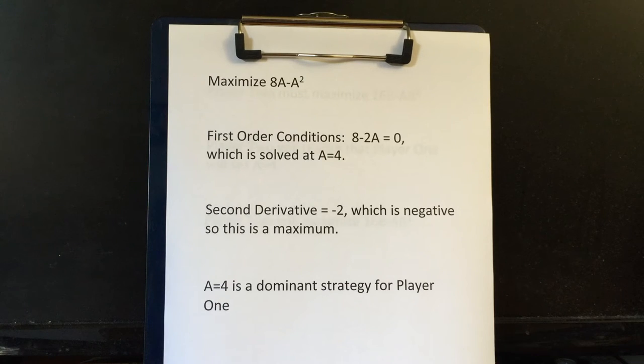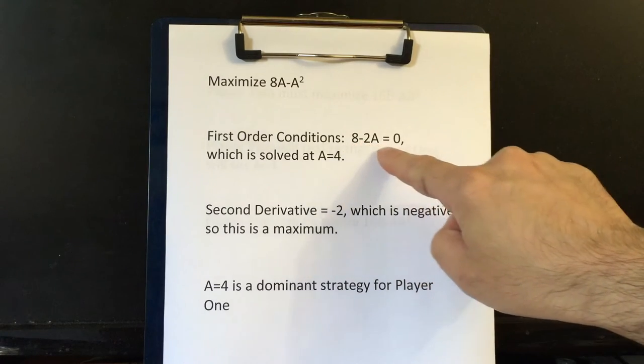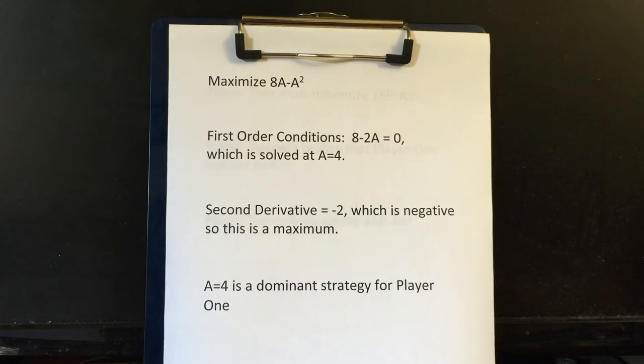Then to make sure we found a maximum and not a minimum, we have to take the second derivative. We take the derivative of this again and we get negative two. And it turns out by the rules of calculus, if the second derivative is negative, you found a maximum and not a minimum.